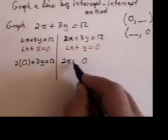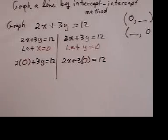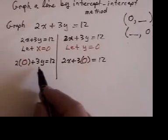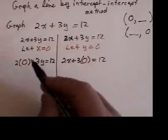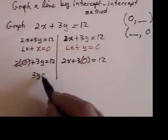2X plus 3 times zero equals 12. Now because zero times anything is zero, this whole term just cancels out and you're left with 3Y equals 12.